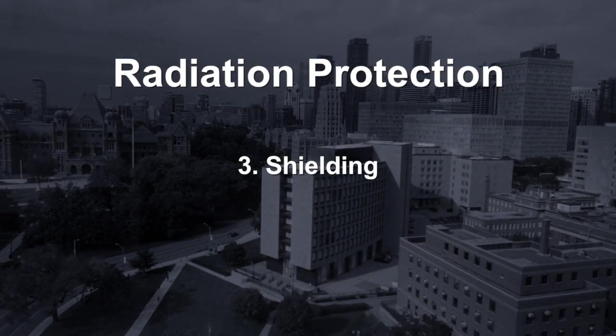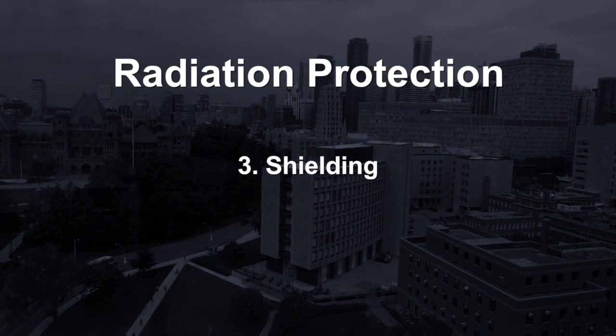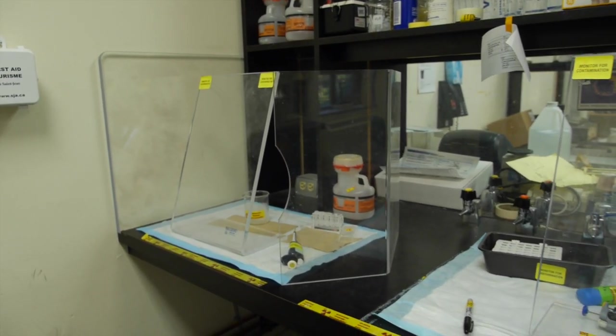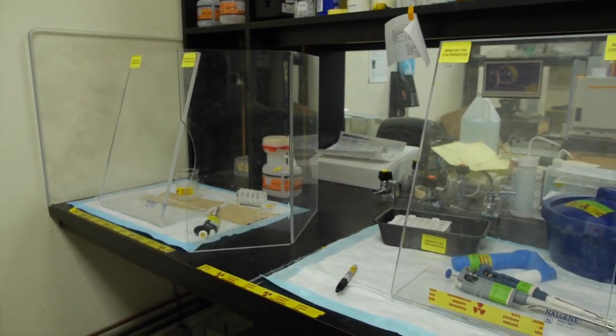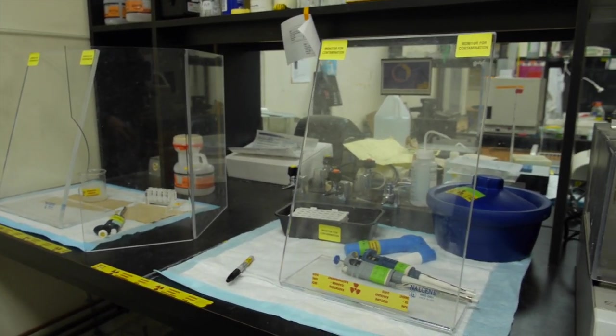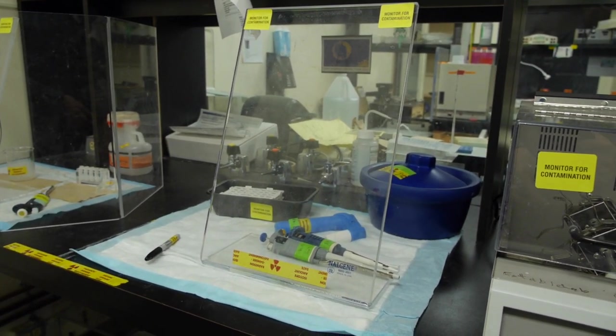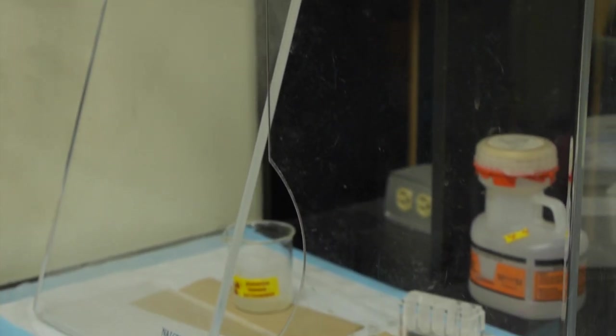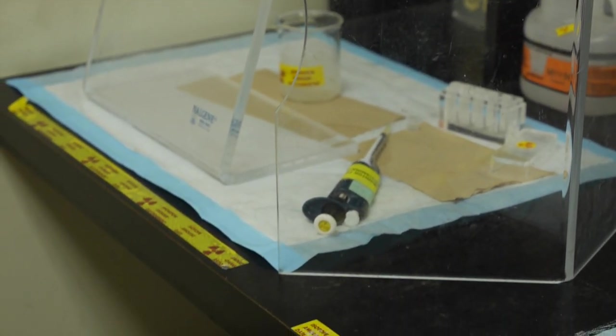Shielding: always use the most shielding that you can. When using shielding, ensure the appropriate materials are used. For beta emitters, use plexiglass or aluminum. For x-ray and gamma emitters, always use lead shielding.